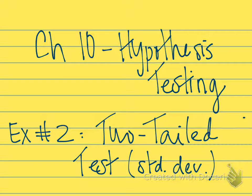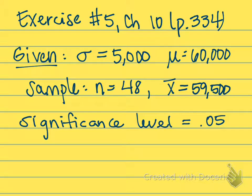Hello, Professor Hildebrandt with another video, another example of an exercise from Chapter 10 on Hypothesis Testing. This time we're going to look at a problem where we have a two-tailed test and once again our standard deviation will be known. If you're following along with me in the textbook, this is exercise number 5 from Chapter 10 on page 334.